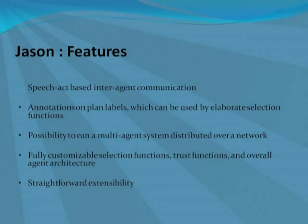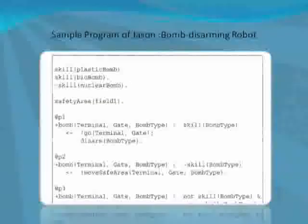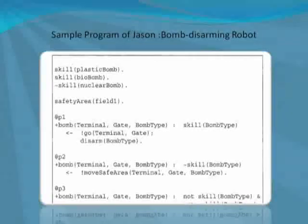As you can see, this program shows sample code for a bomb disarmament robot, which could be a useful application of JASON.